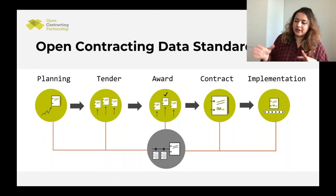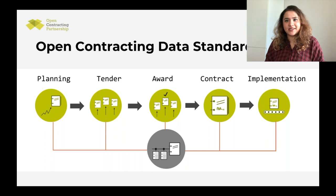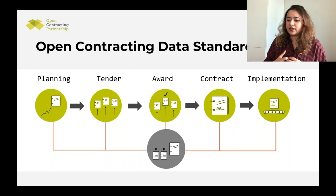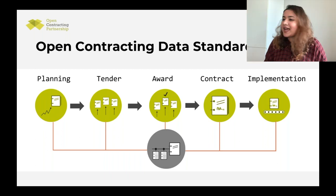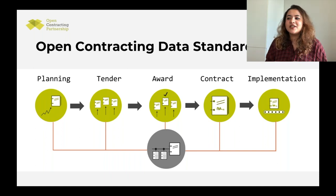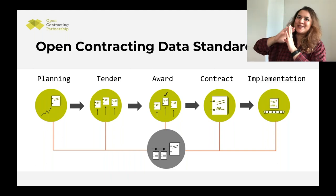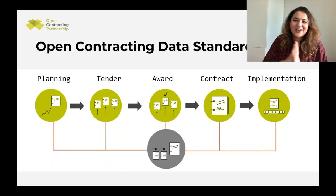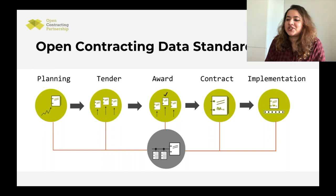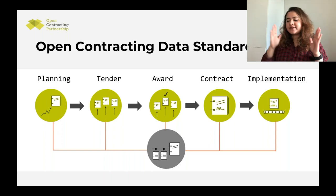Around the world, there is a lot of information on the tender and award stages but almost none on the contract stage, and implementation data exists but is rarely published. Slovakia is a notable exception — they introduced a law stating that a contract is not enforceable unless it is a public document. That is the gold standard for contract transparency, though it is not the case in most countries.